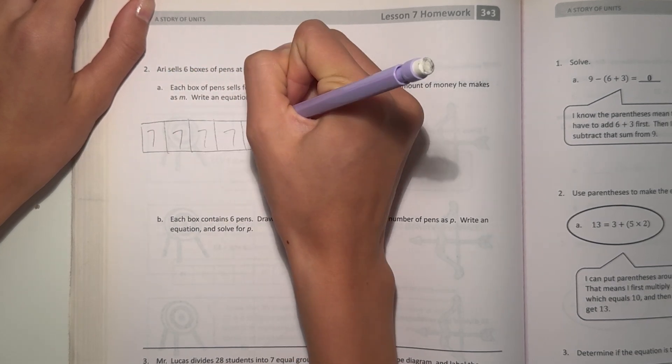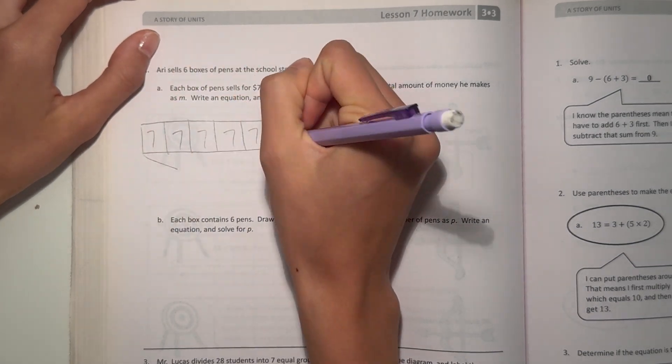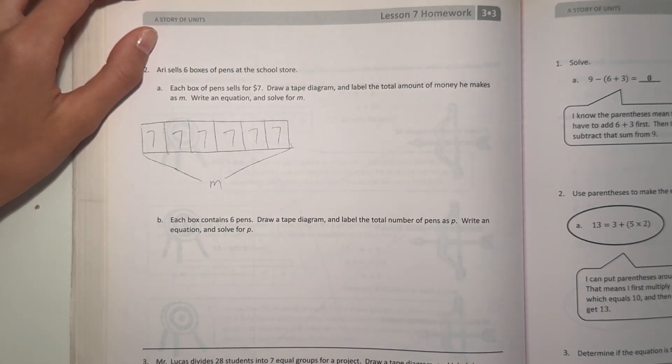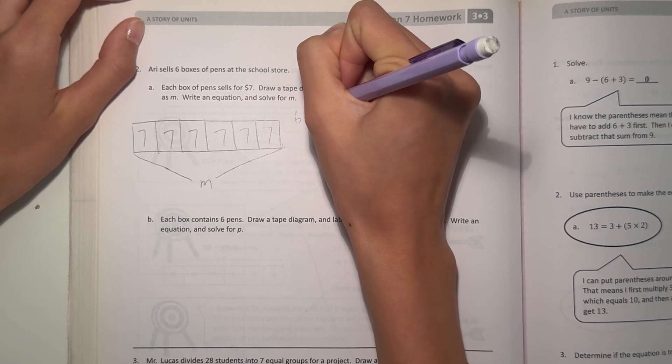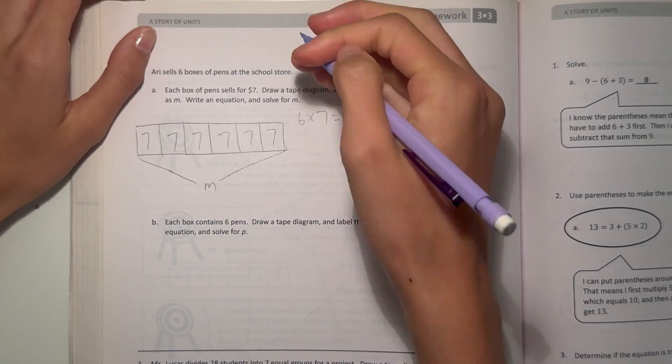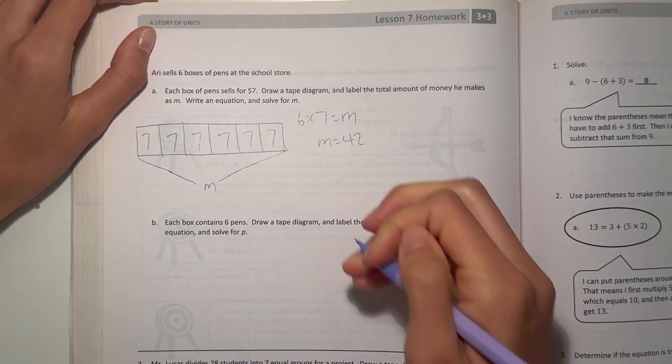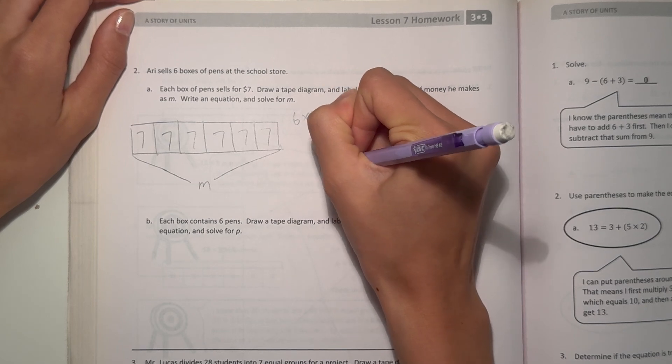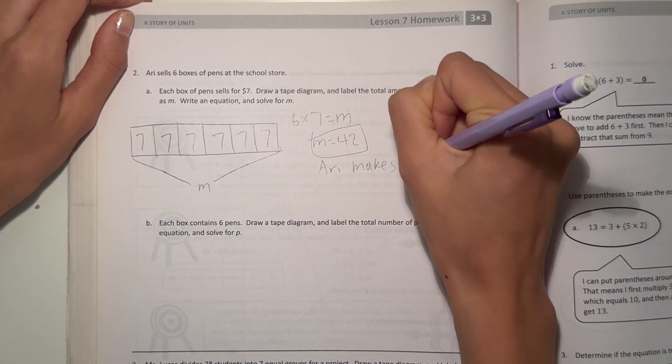And each box was $7. So 7, 7, 7, 7, 7, 7. So, the total amount is what we're trying to find out. And we represent the total amount of money as M. So let's write our equation. We have 6 times 7 equals M. That's our total amount. So then M equals 42 because 6 times 7 is 42. Okay, we'll box our answer. Which means Ari makes $42.